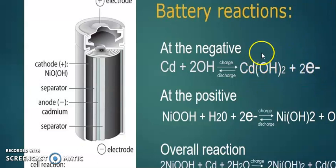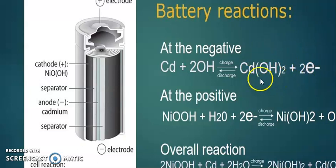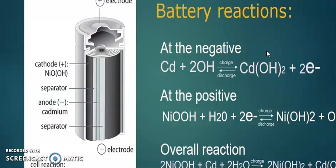The question is: where do the OH⁻ ions come from? As discussed earlier, the electrolyte we are using is potassium hydroxide. The hydroxide ions are trapped by the cadmium ions, and cadmium releases two electrons in the anodic region.